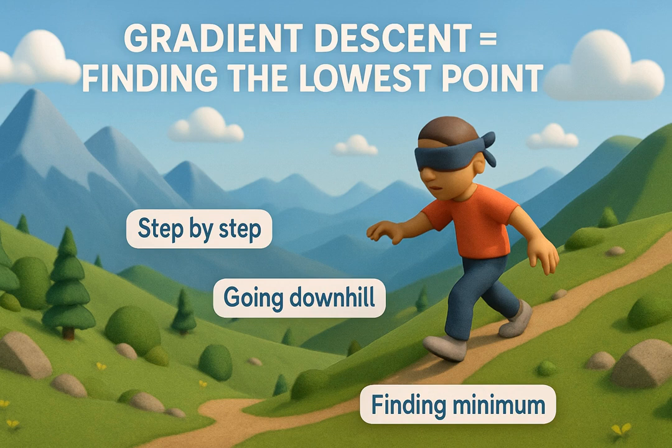Imagine you're hiking down a mountain blindfolded. You can't see the bottom, but you can feel the slope under your feet. What do you do? You take one step at a time, always going downhill. That's exactly what gradient descent does — it finds the lowest point of a curve, step by step.